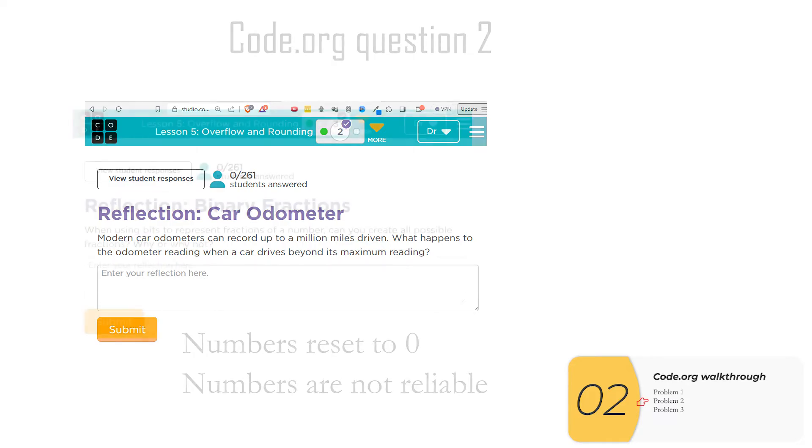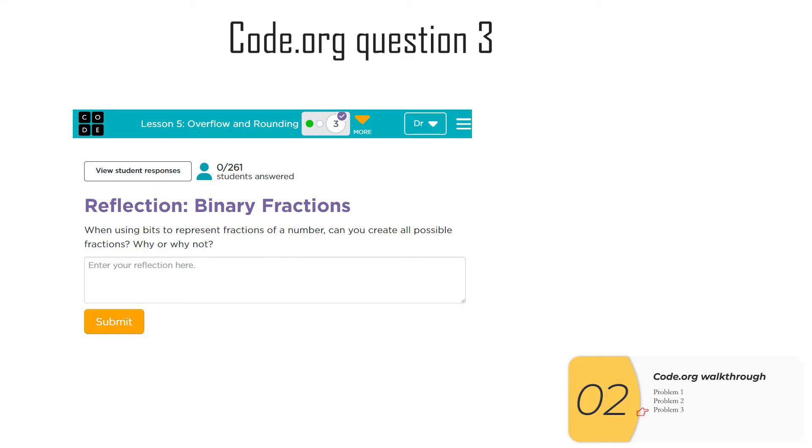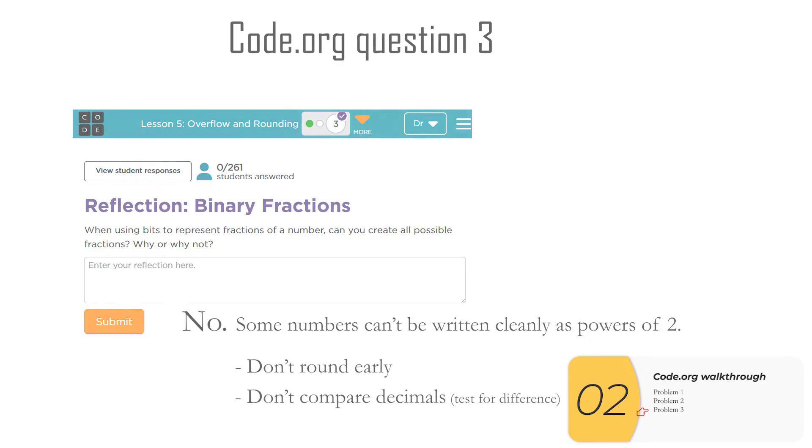And what you saw was that the numbers reset to zero and they kept on going. And once that happens, these numbers are not reliable. Question three is a question about rounding errors, asking if we can represent all possible fractions. We already know the answer to this. For instance, we can't represent one-tenth or 0.1. And the answer is no, because some numbers can't be written cleanly with powers of two. And to avoid these errors, we're going to make sure we don't round early in our codes. And we're going to make sure that we don't compare decimals. Instead, we're going to test for the absolute value of the difference between the two, and make sure that difference is really, really small, small as in some tolerance.